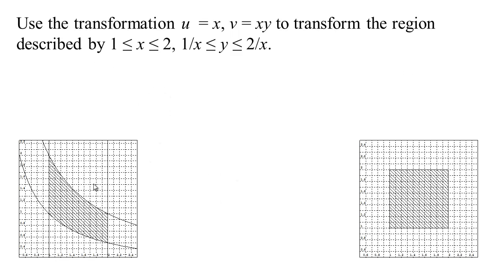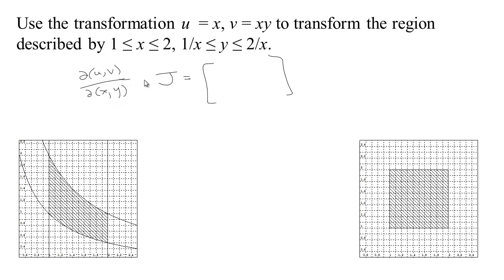Here's another nonlinear transformation. We saw that this region was transformed to a nice square with this transformation. We want to find the Jacobian d(uv)/d(xy) — the stretching factor for converting from x-y to u-v. We take the derivative of u with respect to x, which is 1; the derivative of u with respect to y is 0; the derivative of v with respect to x is y; and the derivative of v with respect to y is x. Our determinant turns out to be 1 times x minus 0 times y, which is just x.